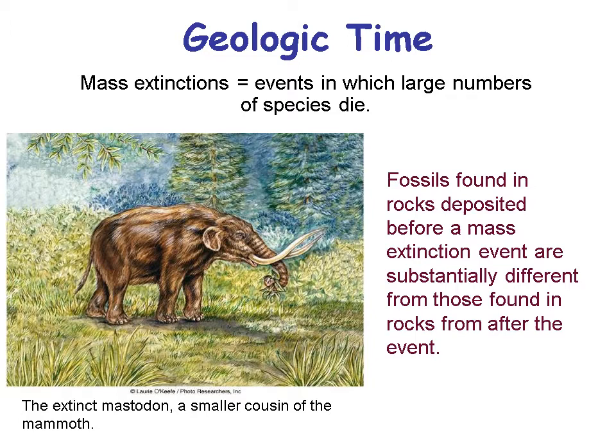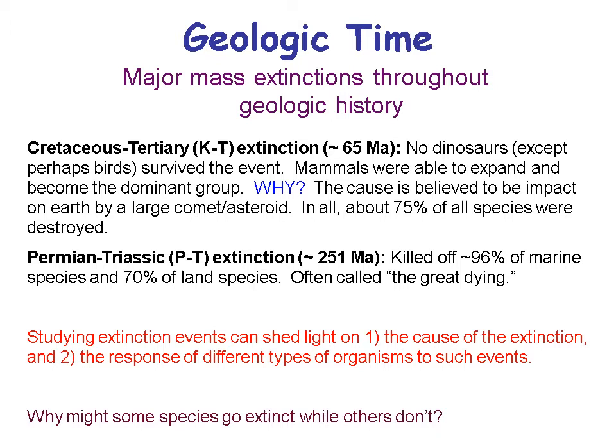This is a picture of an extinct mastodon, which is a cousin of the mammoth. At the Cretaceous-Tertiary extinction, no dinosaurs — except perhaps birds — survived the event. Mammals were able to expand and become the dominant group, because there was no competition from the dinosaurs and mammals were able to take over and live in the niches that dinosaurs had originally occupied.